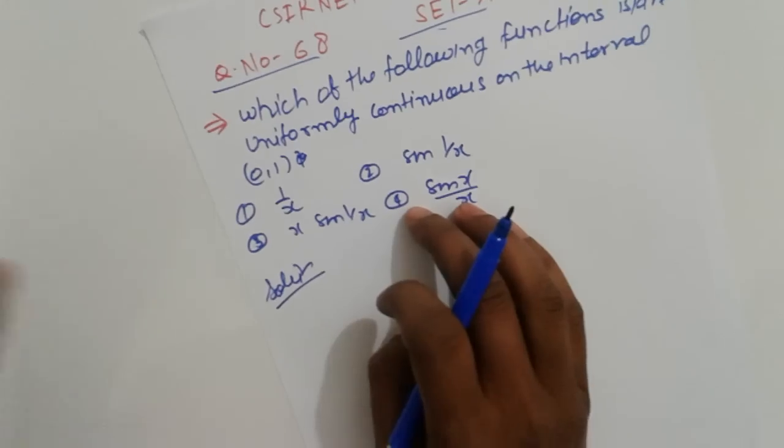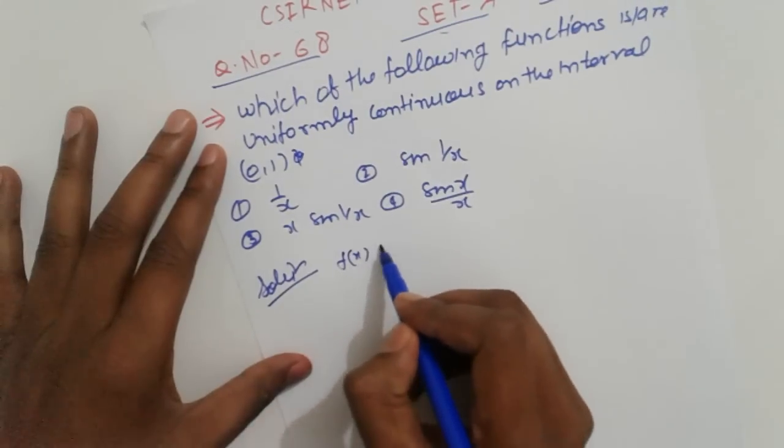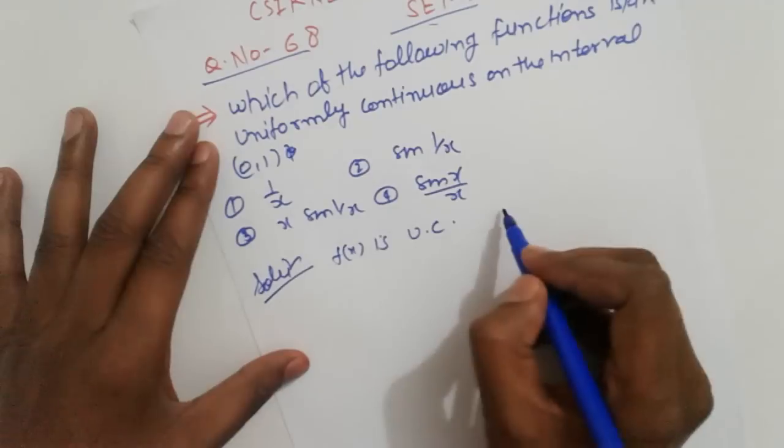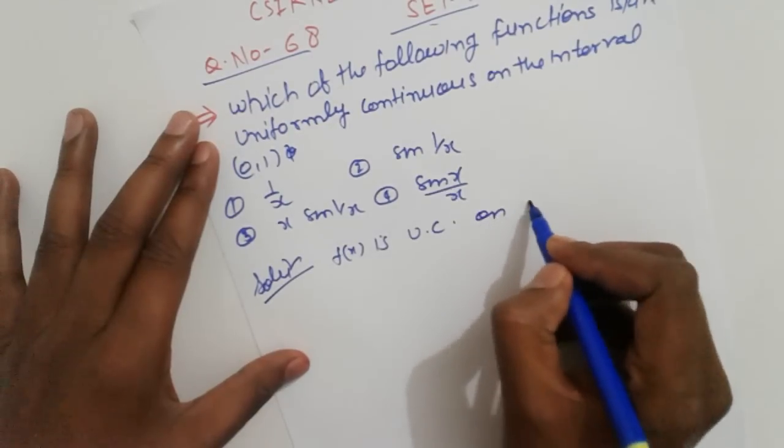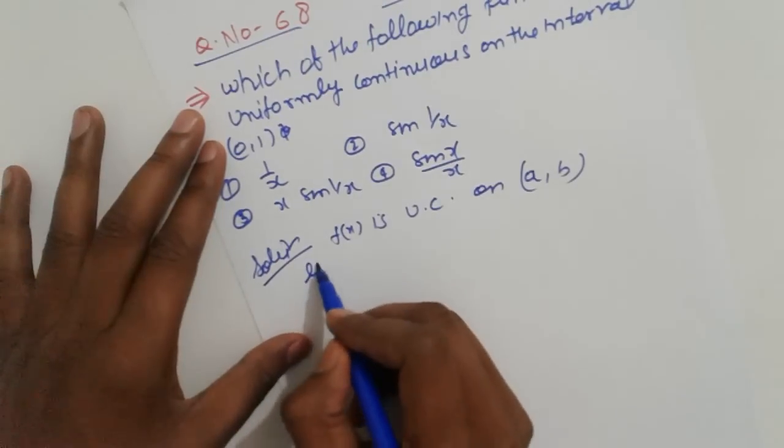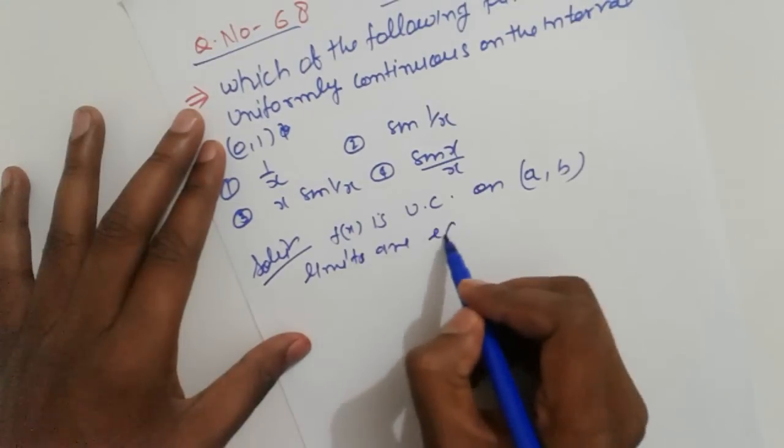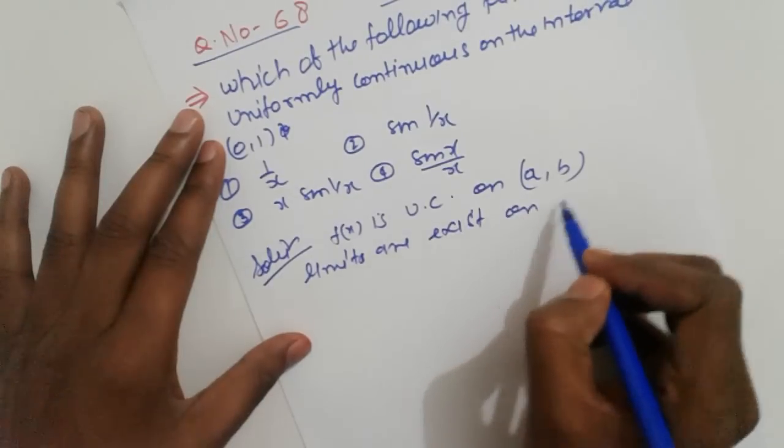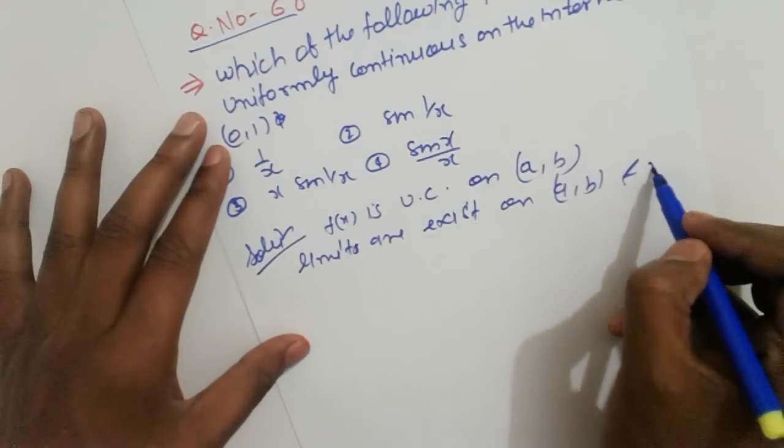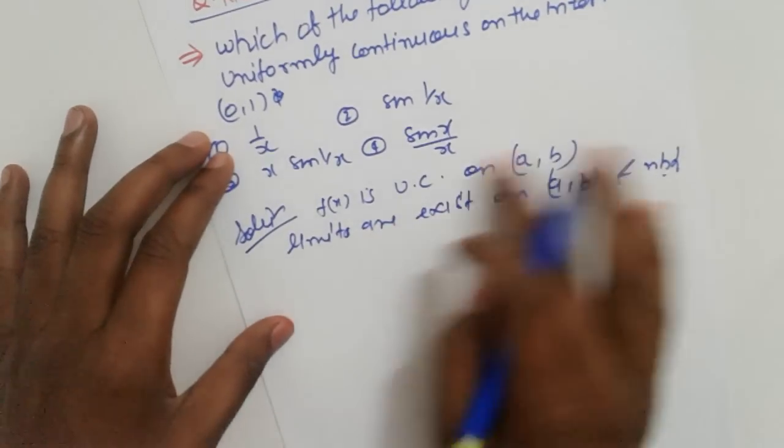So first check one by one. Does the limit exist? Then check if both limits exist. So the conditions here - f(x) is uniformly continuous. So first condition: continuous on open interval (a,b). So f(x) limits must exist on (a,b) and their neighborhoods.